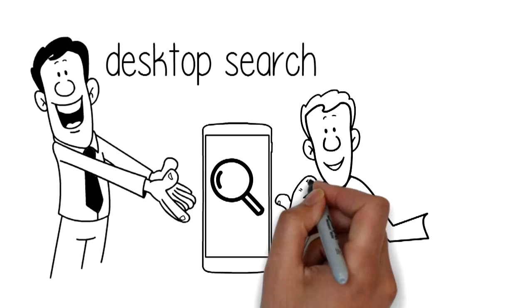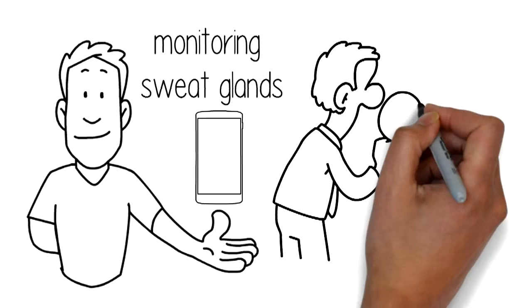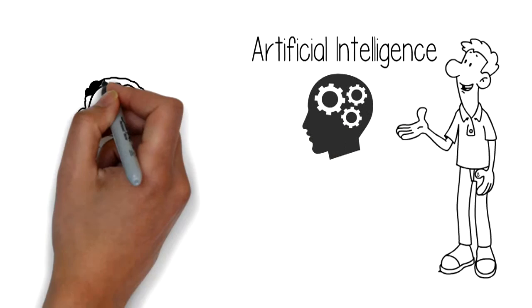Will monitoring sweat glands on mobile screens enhance search intent detection? Will artificial intelligence and machine learning enable better understanding of demographics and phone usage?